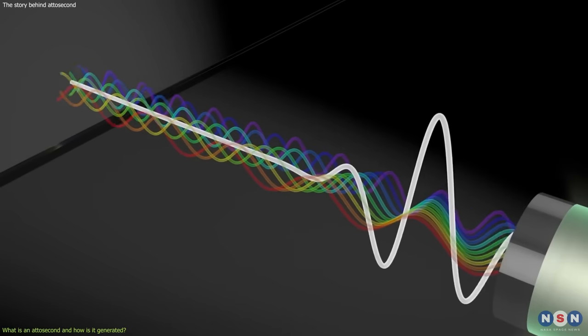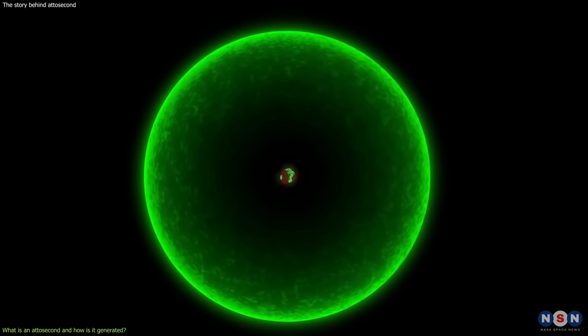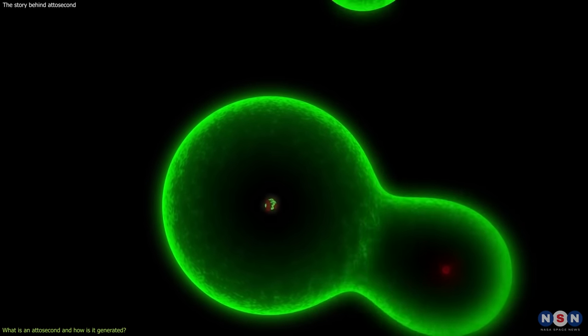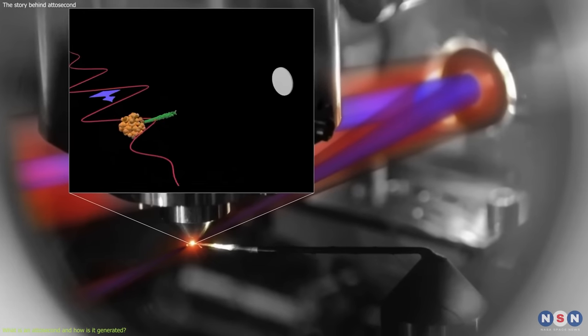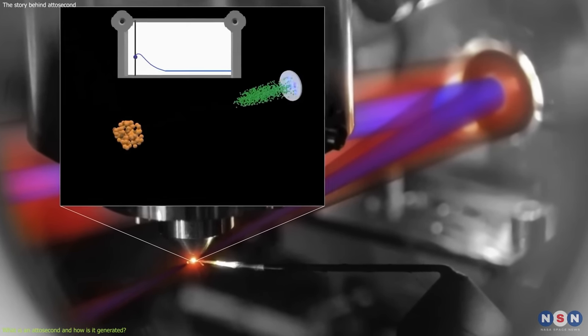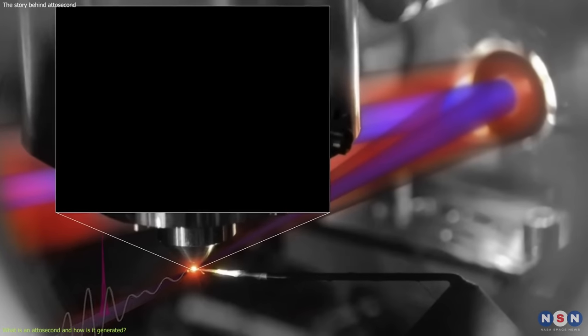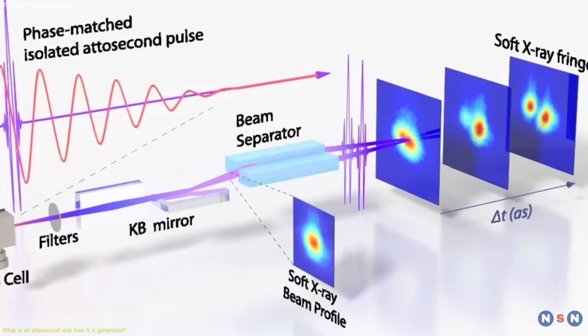The basic idea is to use a very strong laser pulse to rip off an electron from an atom, and then slam it back into the atom after a fraction of a cycle of the laser field. When the electron collides with the atom, it emits a burst of radiation that contains a broad spectrum of frequencies, including extreme ultraviolet, XUV, and soft X-ray photons.